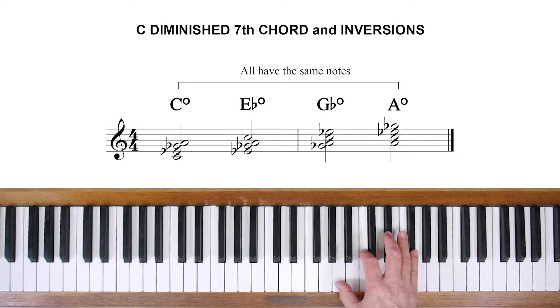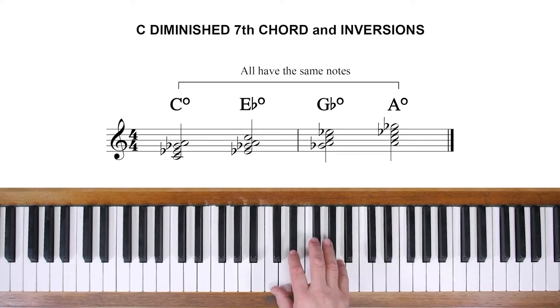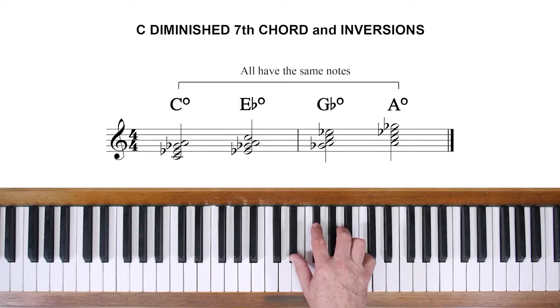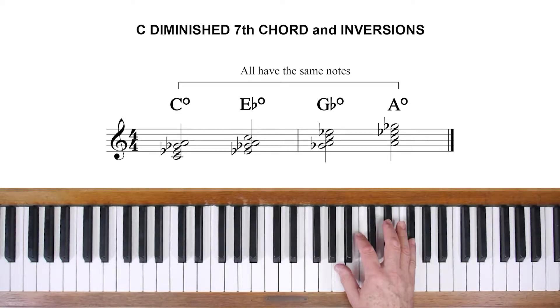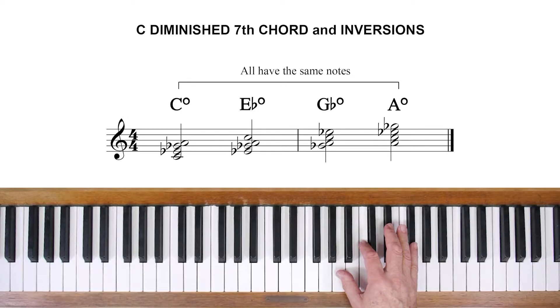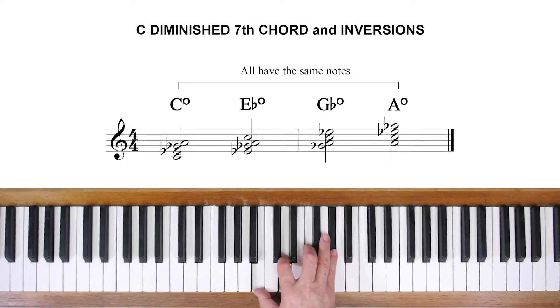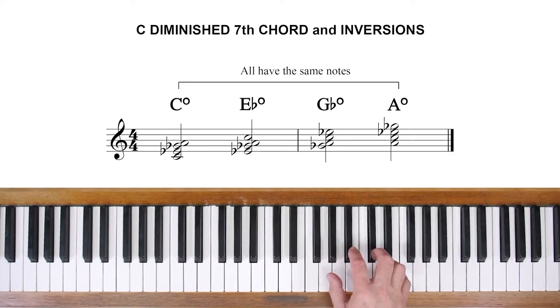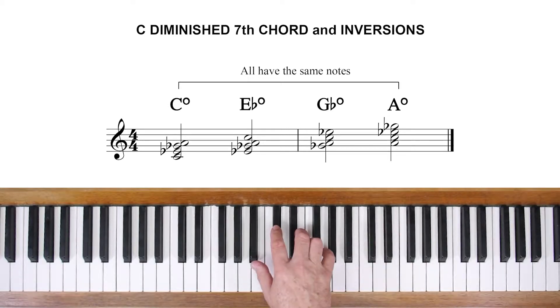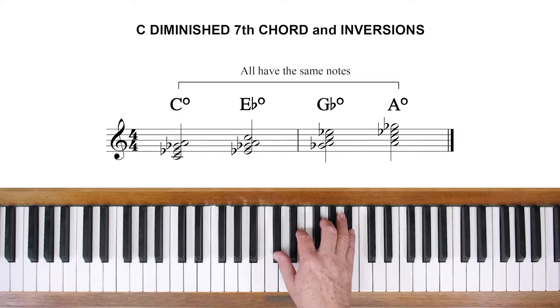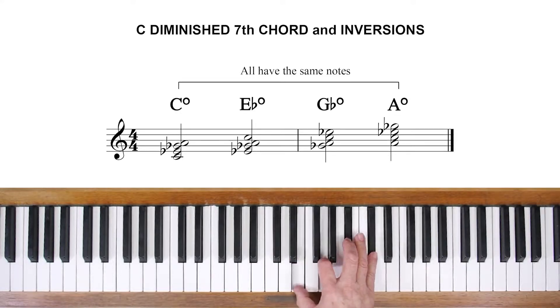So this family of diminished chords has four members: C diminished, E flat diminished, G flat diminished, and A diminished, all of which share the same notes. It follows that there are two other families: B diminished and its sisters or brothers D, F, and A flat diminished, and B flat diminished with its cousins C sharp, E, and G.